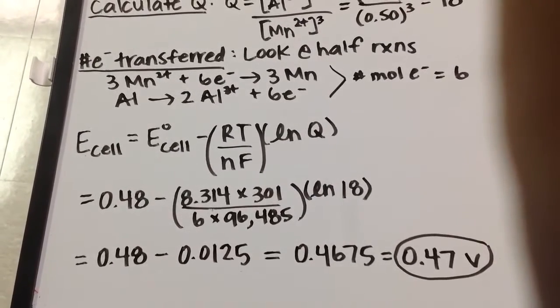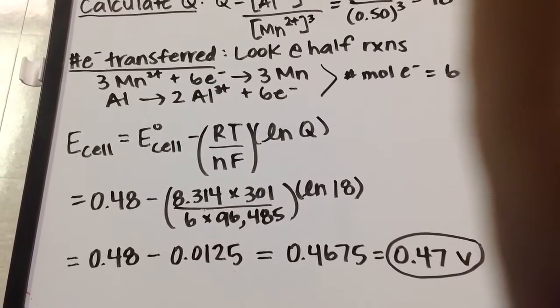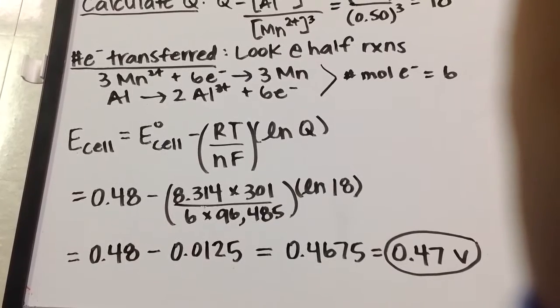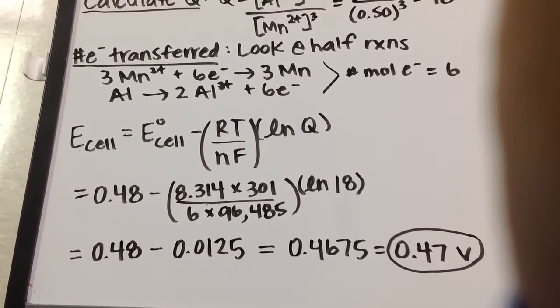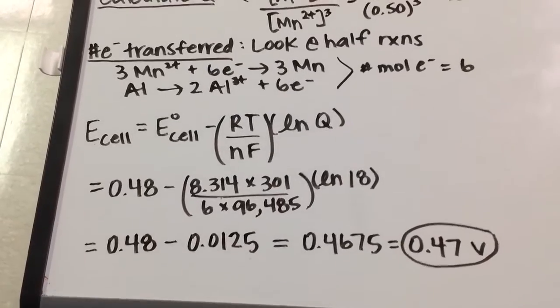But nonetheless, anytime you have a cell potential calculation where the concentrations are not 1 molar and the temperature is not 25 degrees Celsius, you have to calculate the cell potential this way.